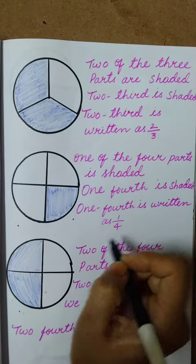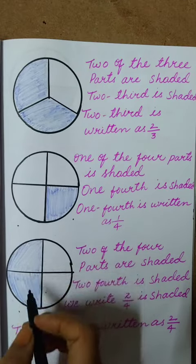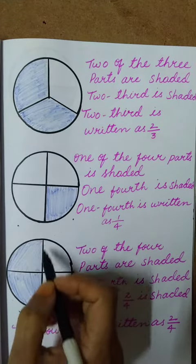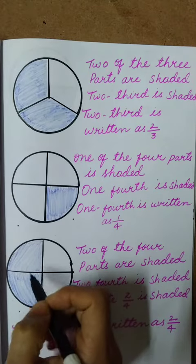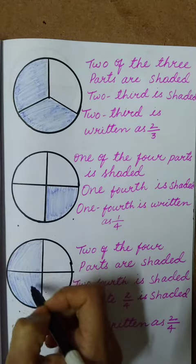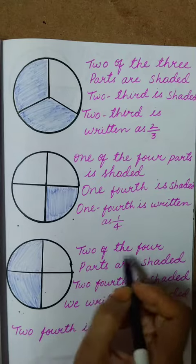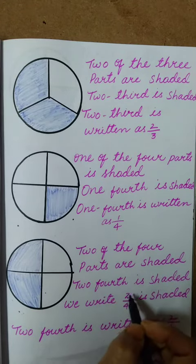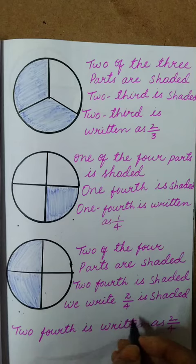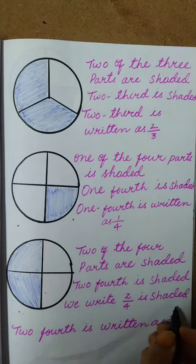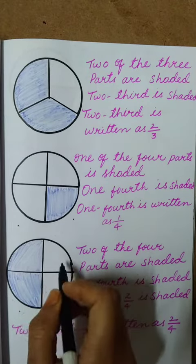Here one whole part is there. In this, two parts I have shaded out of four equal parts. We can write it as 2 by 4. Two of the four parts is shaded. Two fourth is written as 2 by 4.